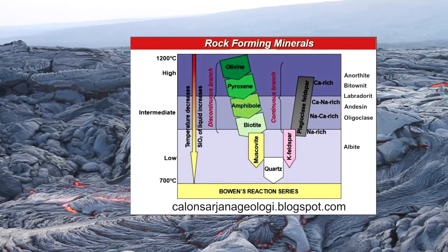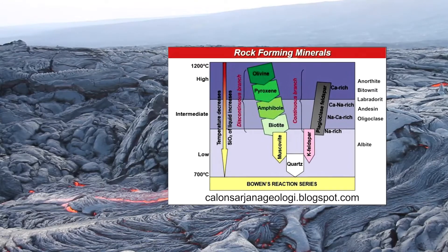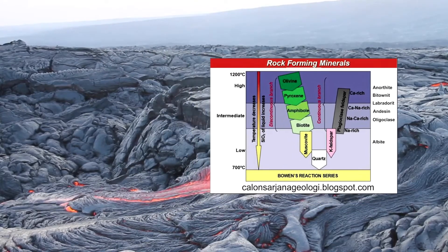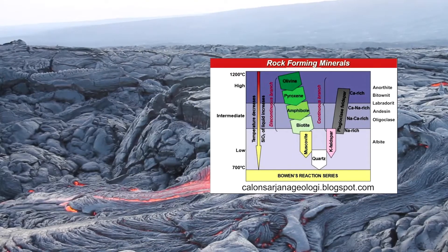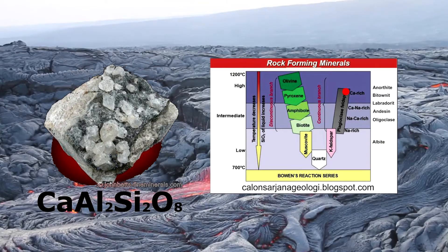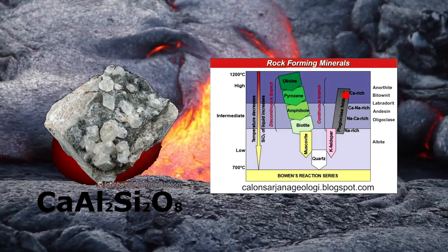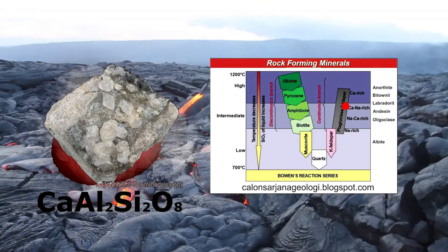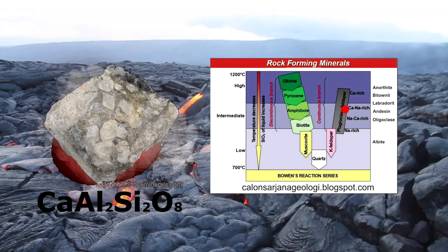In the continuous path is plagioclase feldspar, which first crystallizes out with a calcium-rich composition at higher temperatures, around 1300°C. This mineral then continues to react with sodium as it cools.